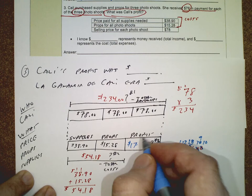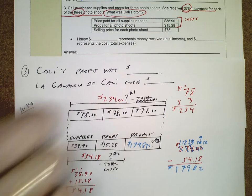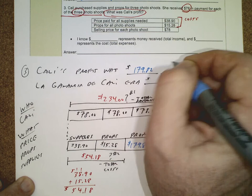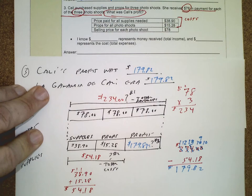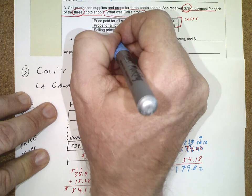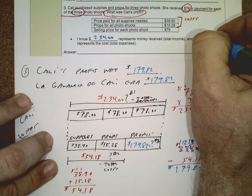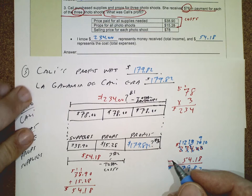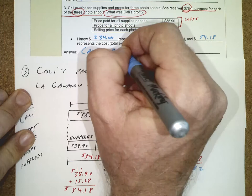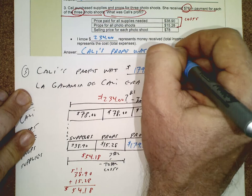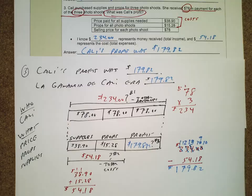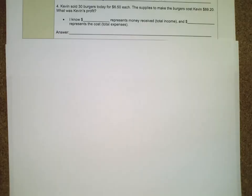We now have an answer next to all three question marks, so we've completed the problem. $234 represents the money received, total income; $54.18 represents the total cost, total expenses. The answer is: Callie's profit was $179.82. That takes care of problem number three.